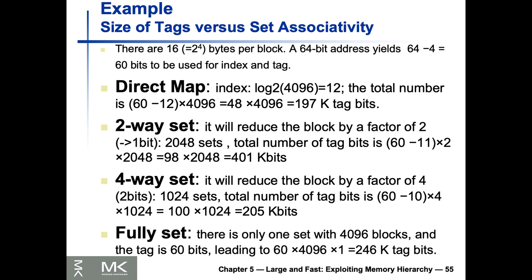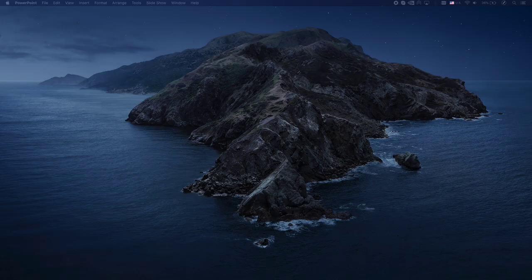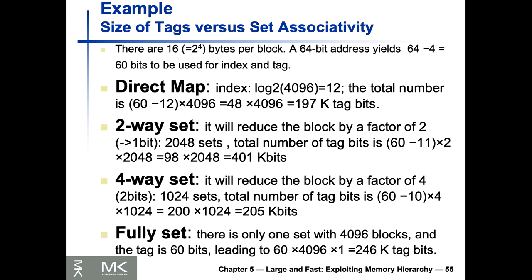A student points out a typo in the calculation. After reviewing: 50 × 4 × 1024 gives the same result of approximately 200K. Thanks for pointing it out.